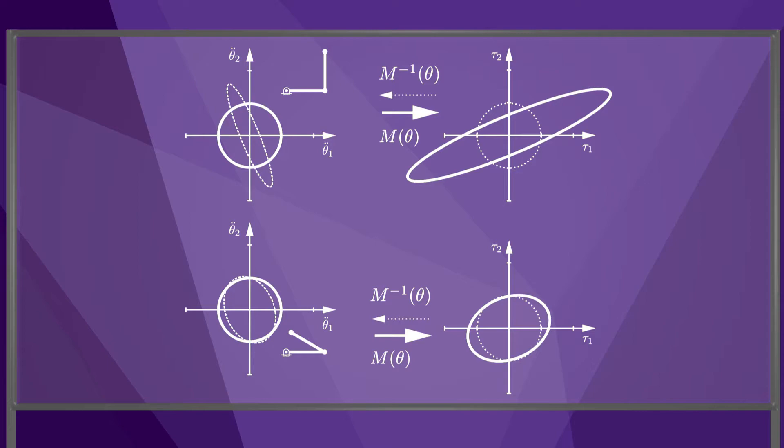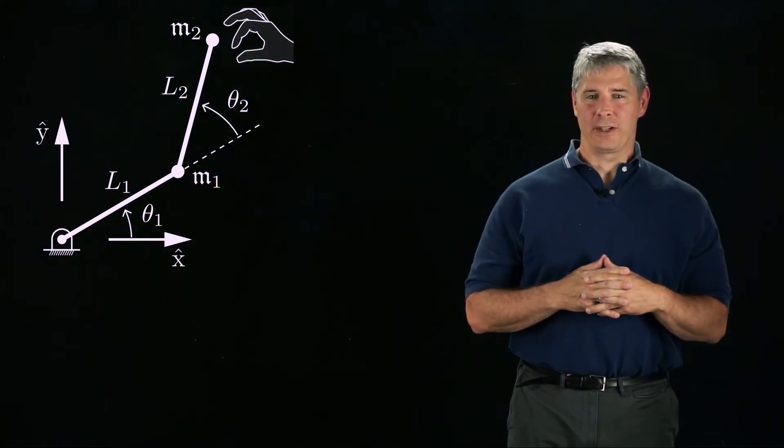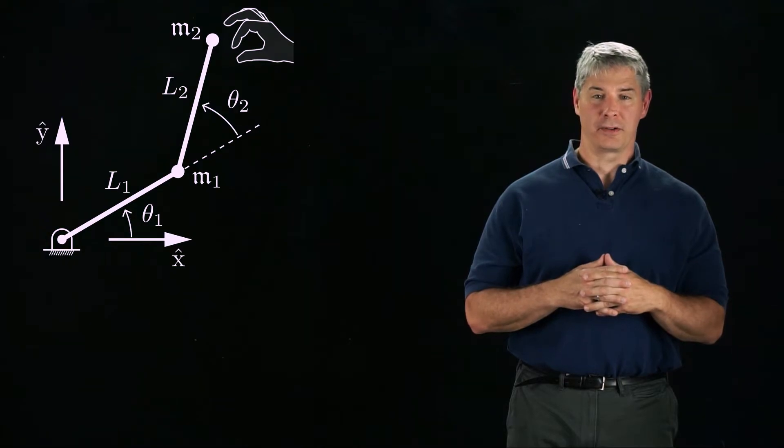Since these ellipses are in joint torque and acceleration space, they are not easy to understand intuitively. Instead, imagine that you grab the endpoint of the robot and you feel how massy it is when you move it in different directions.